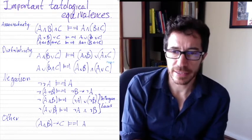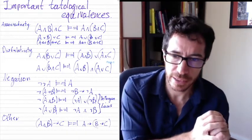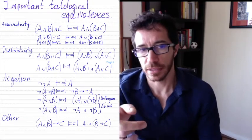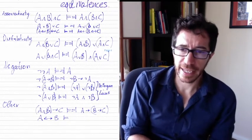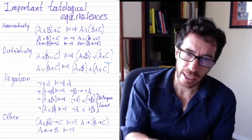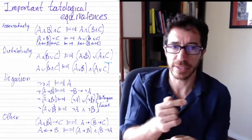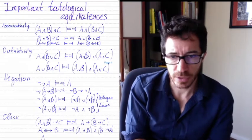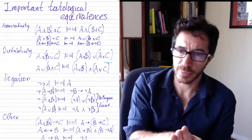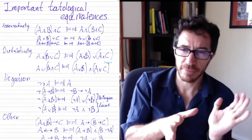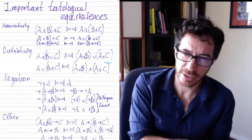A few more useful equivalences: (A and B) → C is equivalent to A → (B → C), because if A and B together imply C and you know A, then B implies C. Also, A ↔ B is equivalent to (A → B) and (B → A) — if-and-only-if means arrows in both directions with an 'and' between them. Finally, A → B is equivalent to not A or B, because for A → B to be false you need A true and B false, so for it to be true you need not A or B.